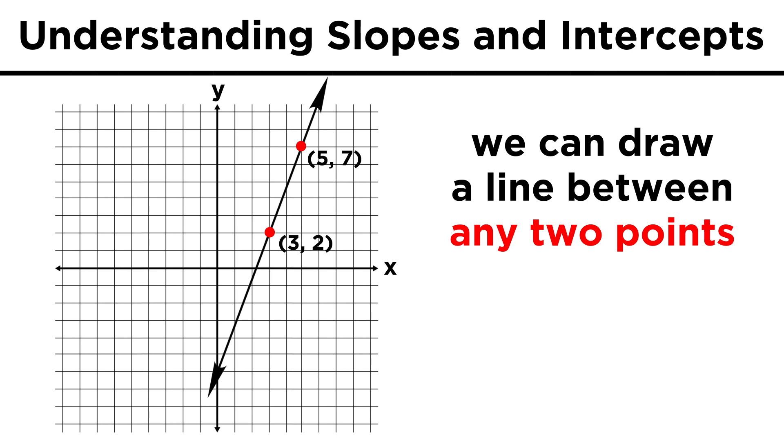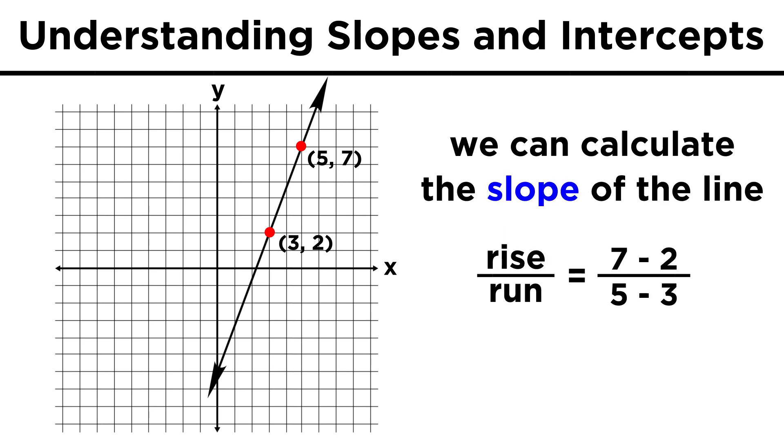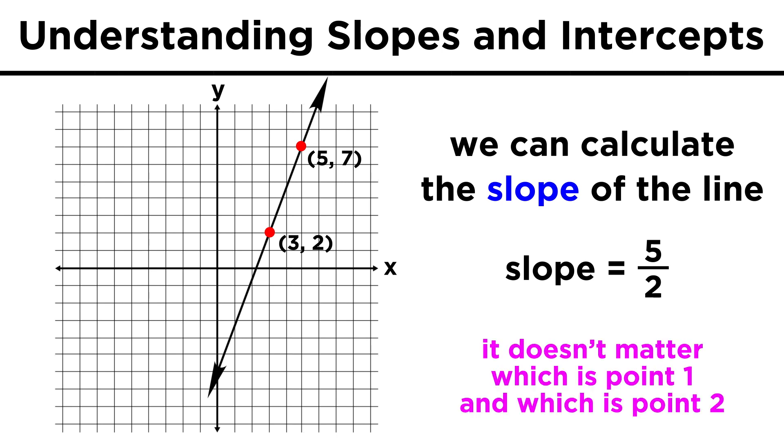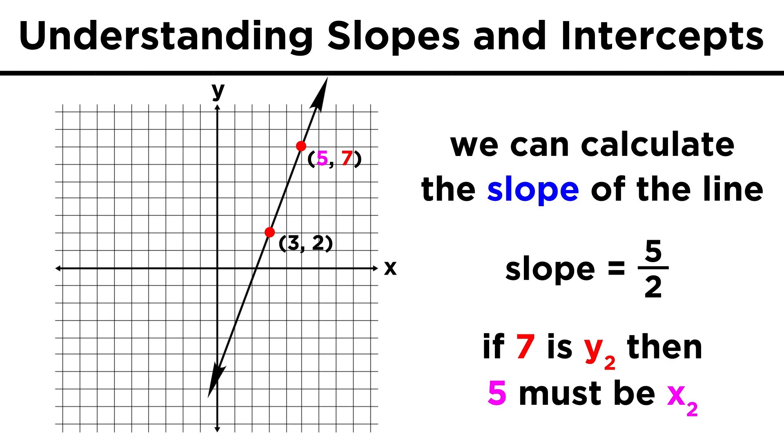And draw a line between them. We could also calculate the slope. Seven minus two is five, and five minus three is two, so the slope is five halves. Always remember that when calculating slope, it doesn't matter which point is point one and which is point two, but the coordinates of each point must remain together, so whichever y value is y two, the x value in that point must be x two and not x one. That would lead to an incorrect slope calculation.